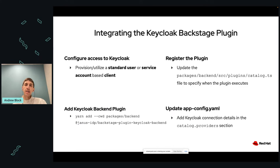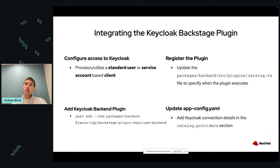To integrate the Backstage backend catalog with KeyCloak: first, configure access to KeyCloak using either a standard user or a service account to allow Backstage to communicate with KeyCloak. Then customize your Backstage instance by adding the backend plugin, register the plugin within the catalog's backend component, and finally add the configuration in the appconfig.yaml.